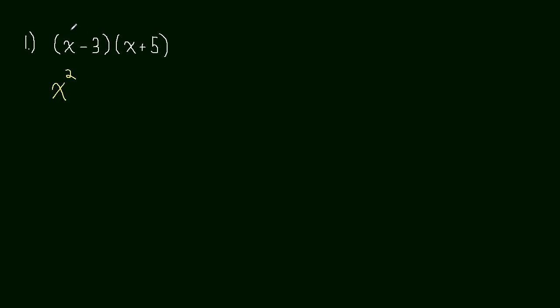Now what I'm interested in is what happens when this x multiplies this 5, and also when this negative 3 multiplies this x. That's going to be plus x times 5 which is just 5x. And then negative 3 times x, that's going to be minus 3x. I'm going to stick with the shorthand subtraction.